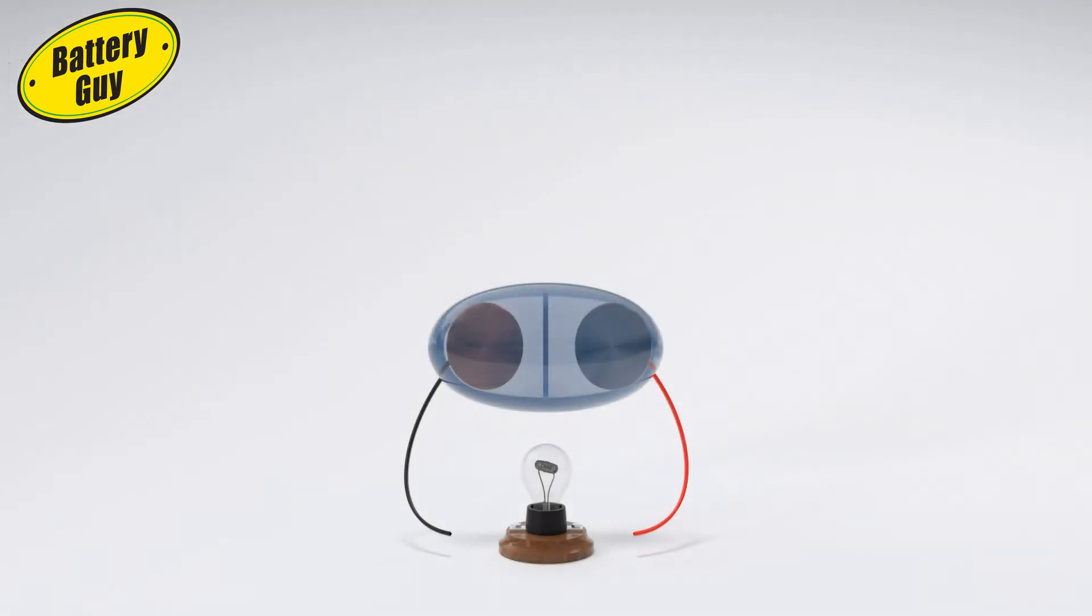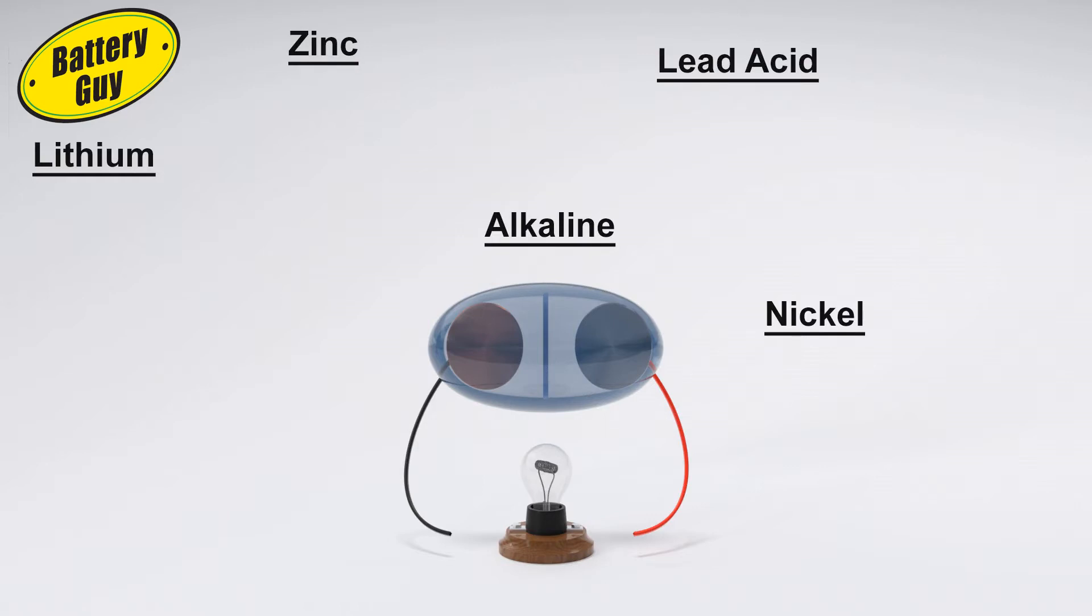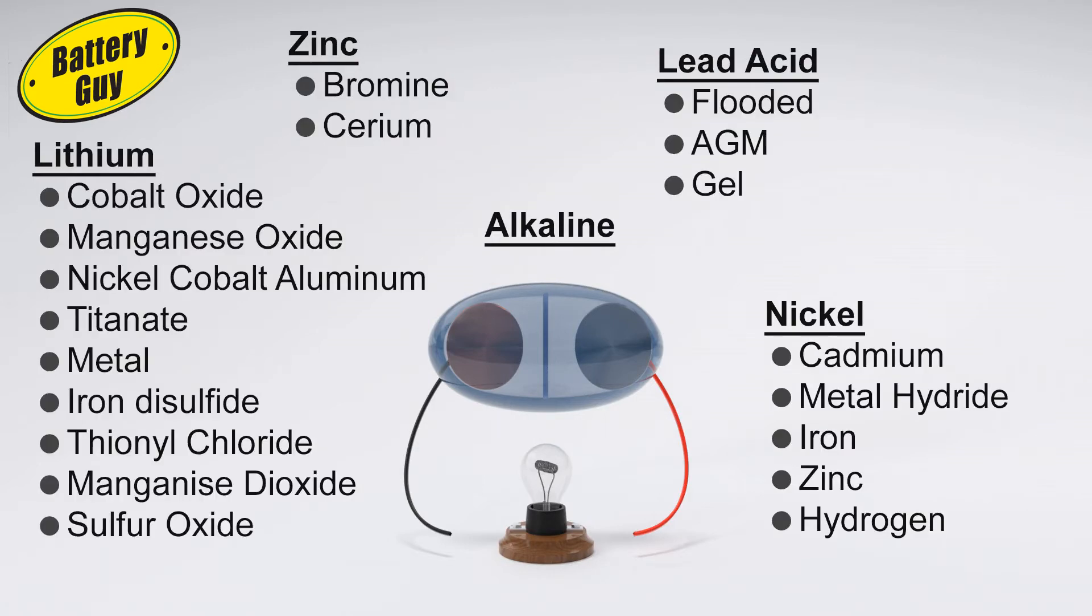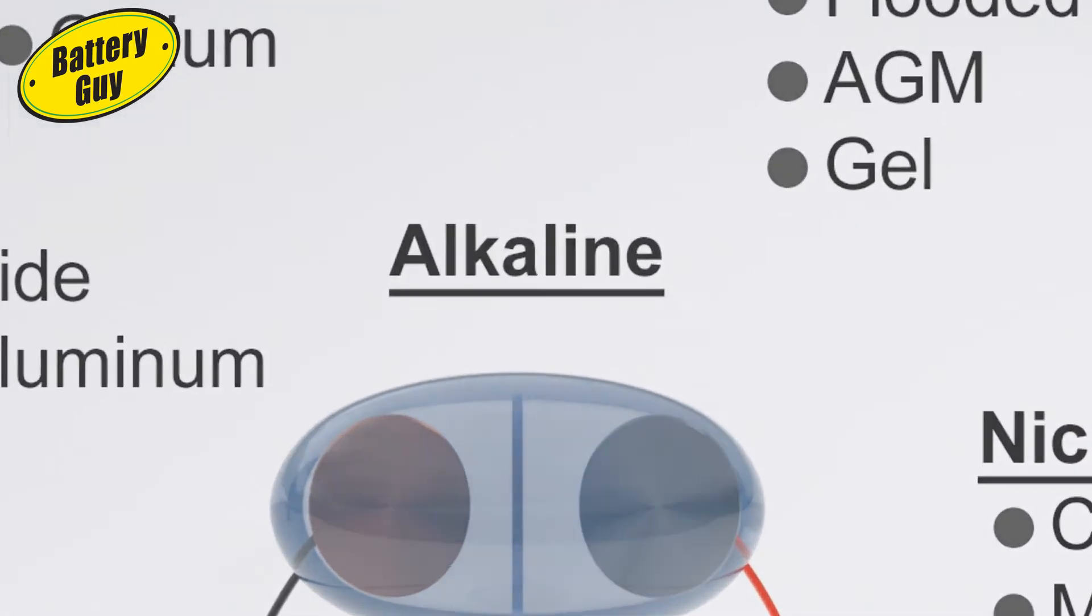There are numerous chemistry types, and numerous types within each chemistry. In this video, we'll look at how alkaline-based batteries are made.